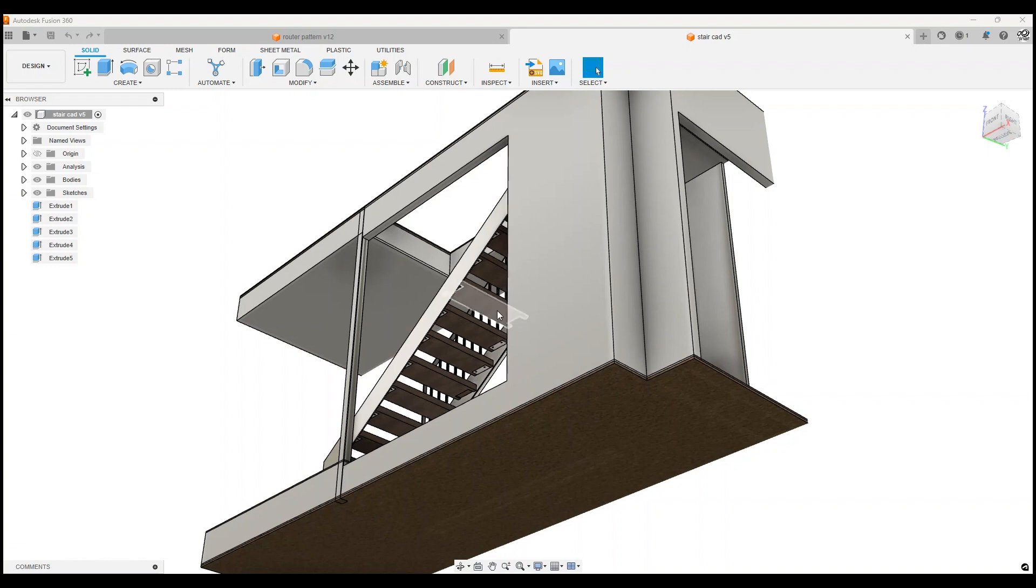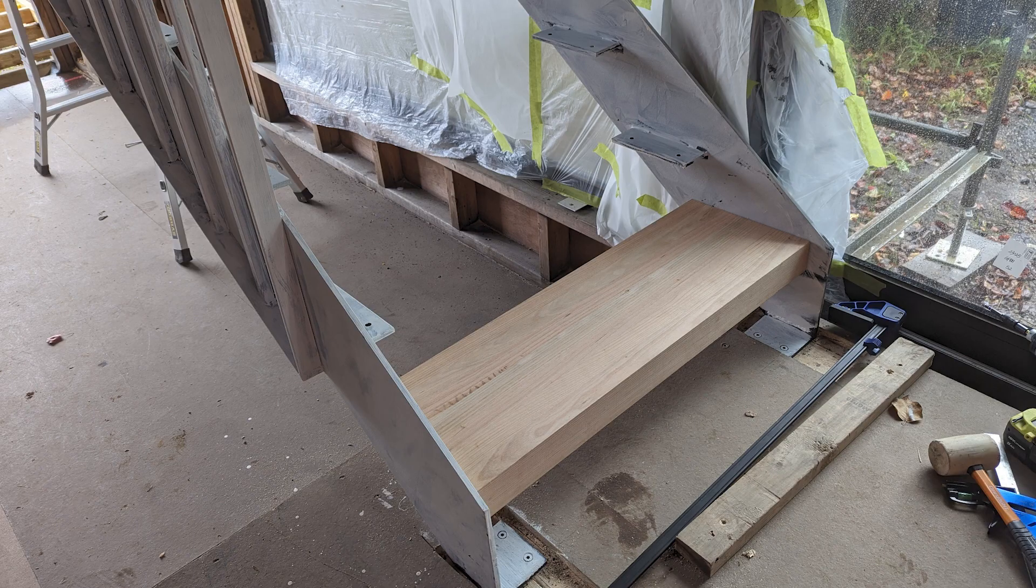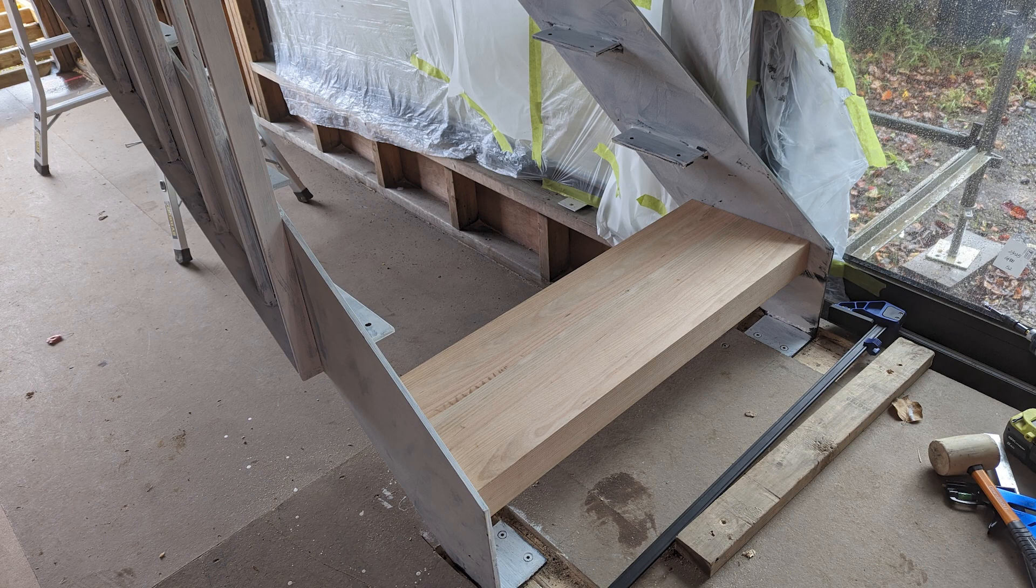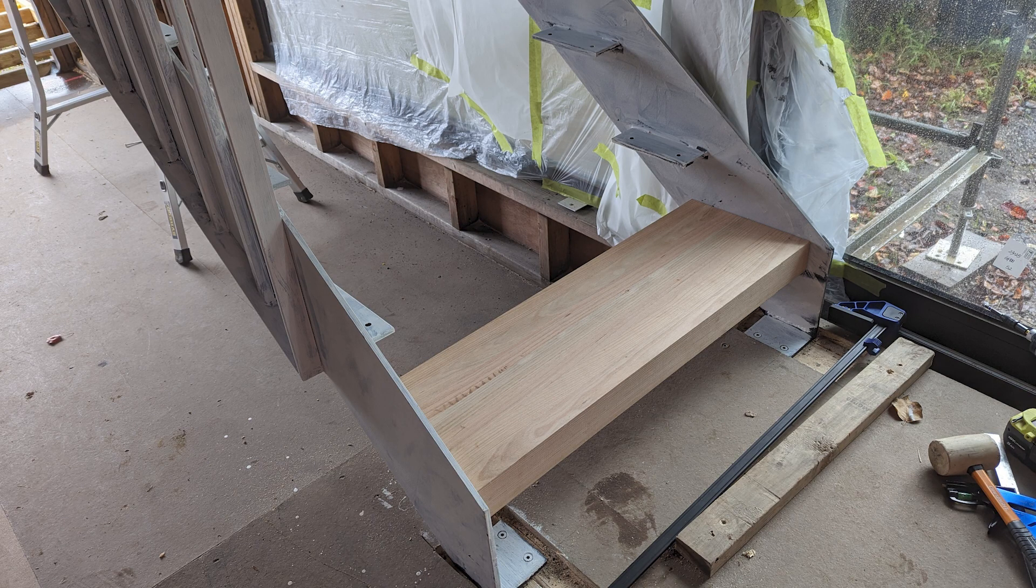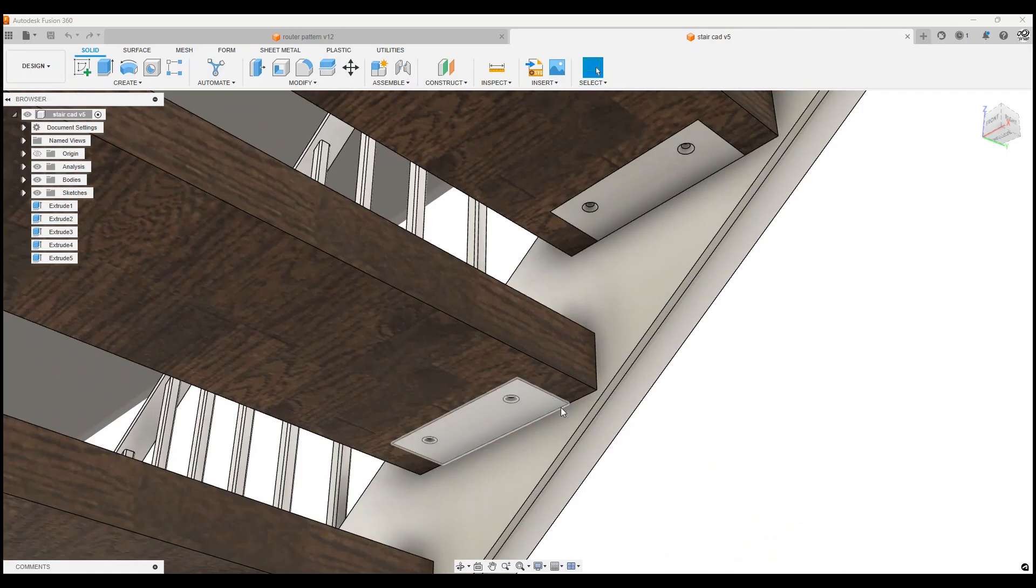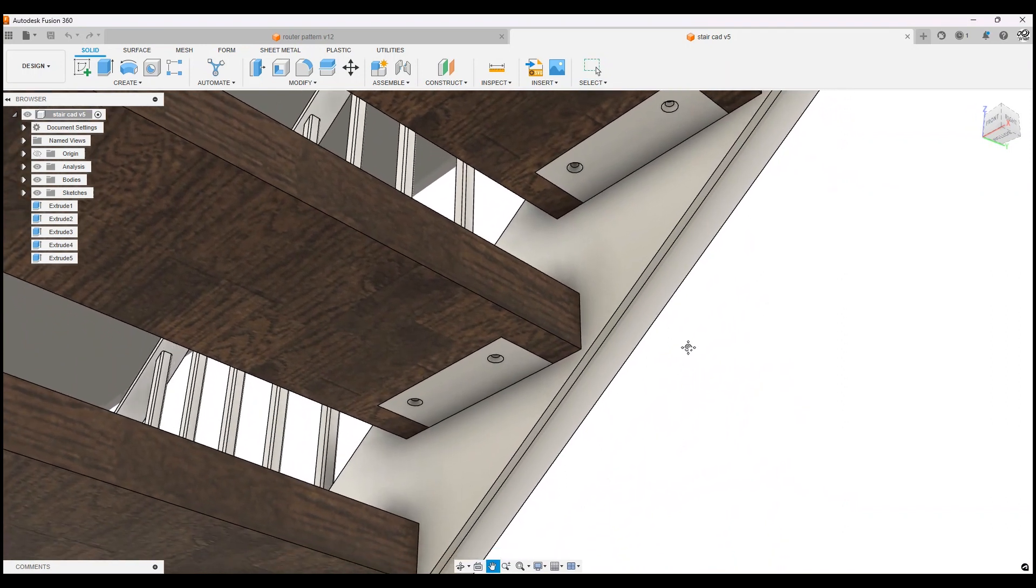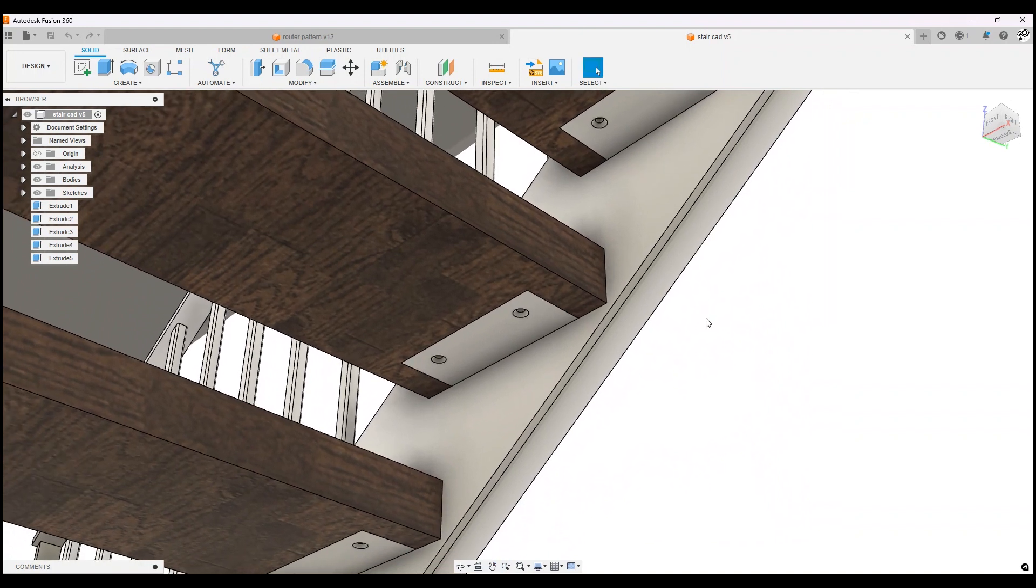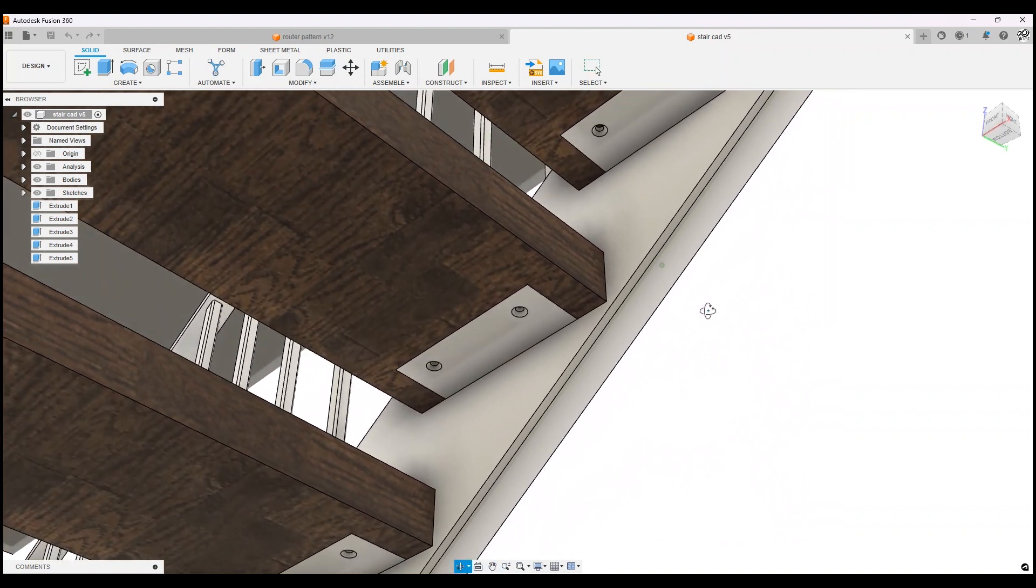With the design of the stairs, we wanted the underside of the timber treads to sit flush with the steel cleats that were welded onto the sides of the stringers. There are 16 treads altogether, and I had to rebate or basically cut into the timber treads so that it would sit flush.